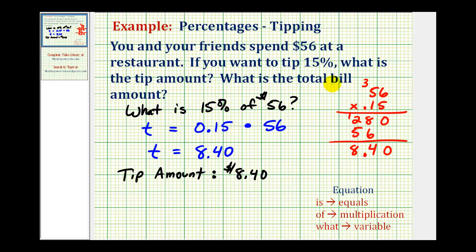Now the second part asks us what the total bill would be. The bill is the fifty-six dollars plus the tip of eight dollars and forty cents. So we have fifty-six point zero zero plus eight dollars and forty cents.